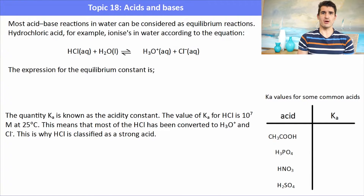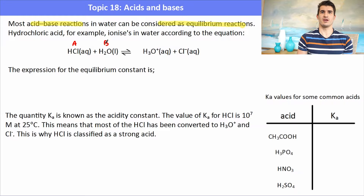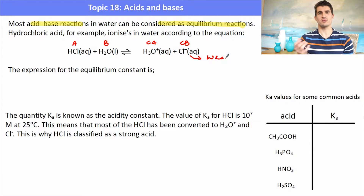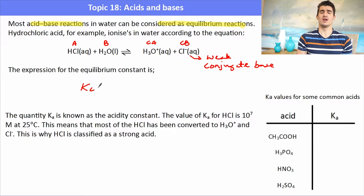We'll also talk about when you need to write down your assumption in the question. Most acid and base reactions in water can be described as equilibrium. For instance, hydrochloric acid ionizes in water to produce H3O+ and Cl-. HCl is the acid, water is the base, and Cl- would be described as the conjugate base. Because HCl is a strong acid, it has a weak conjugate base.